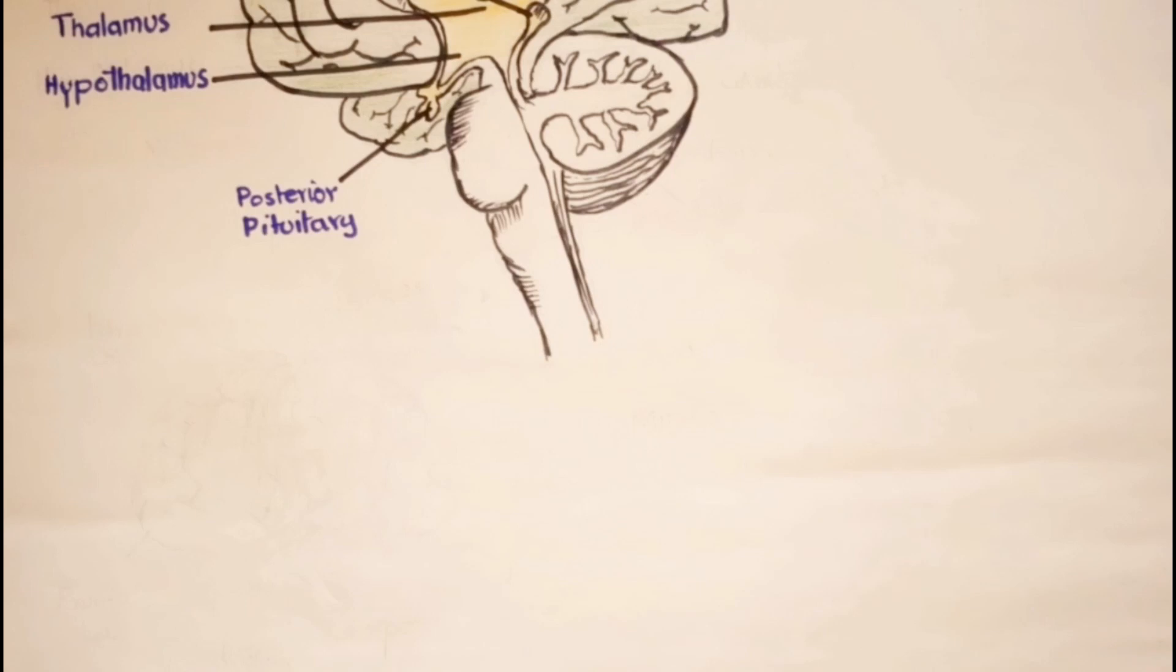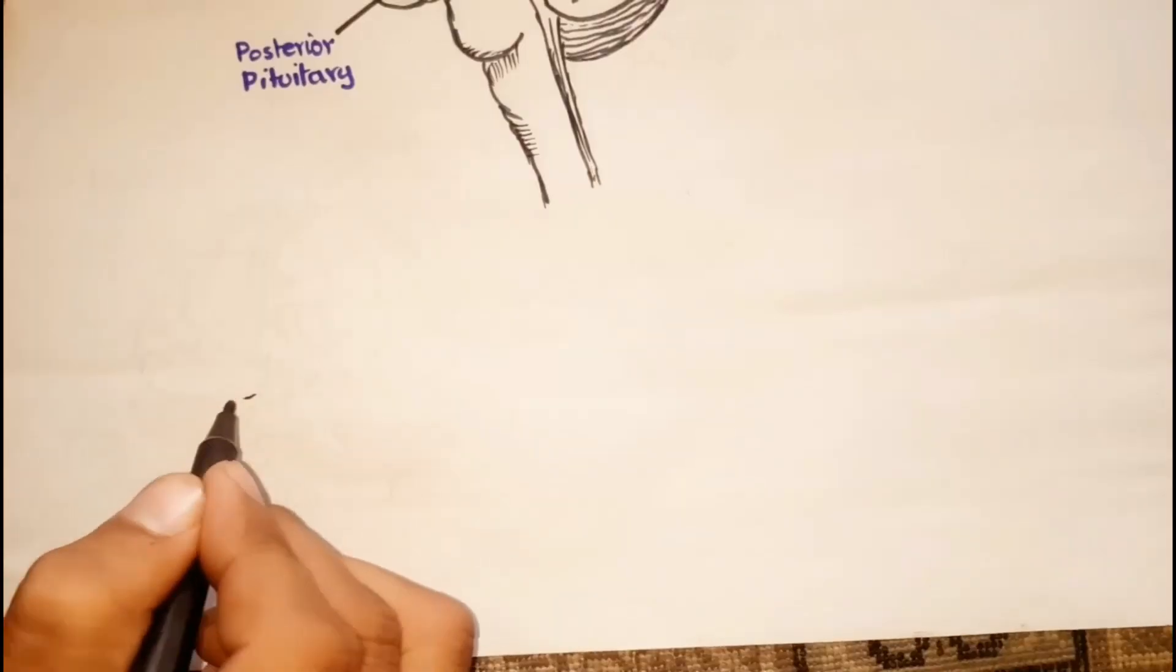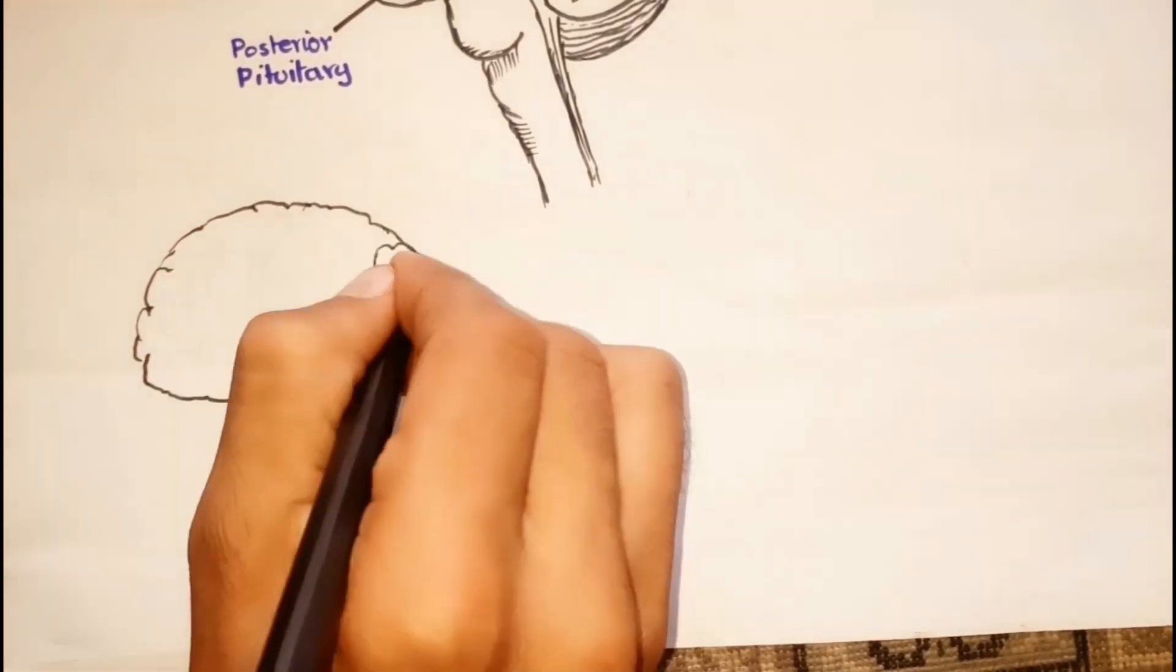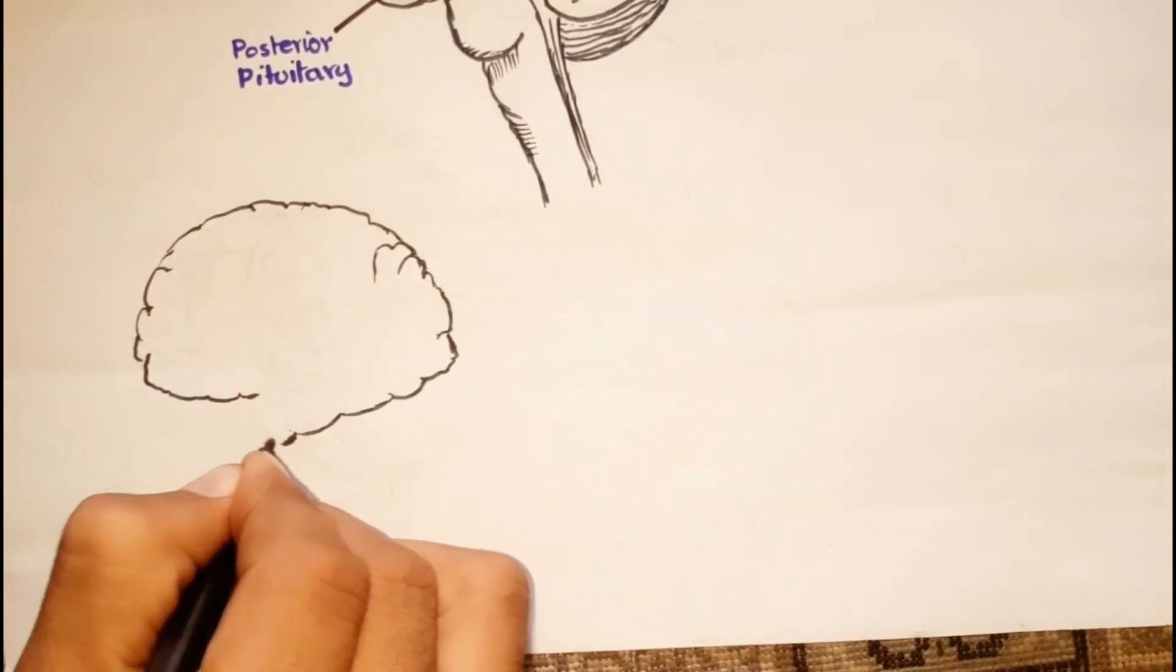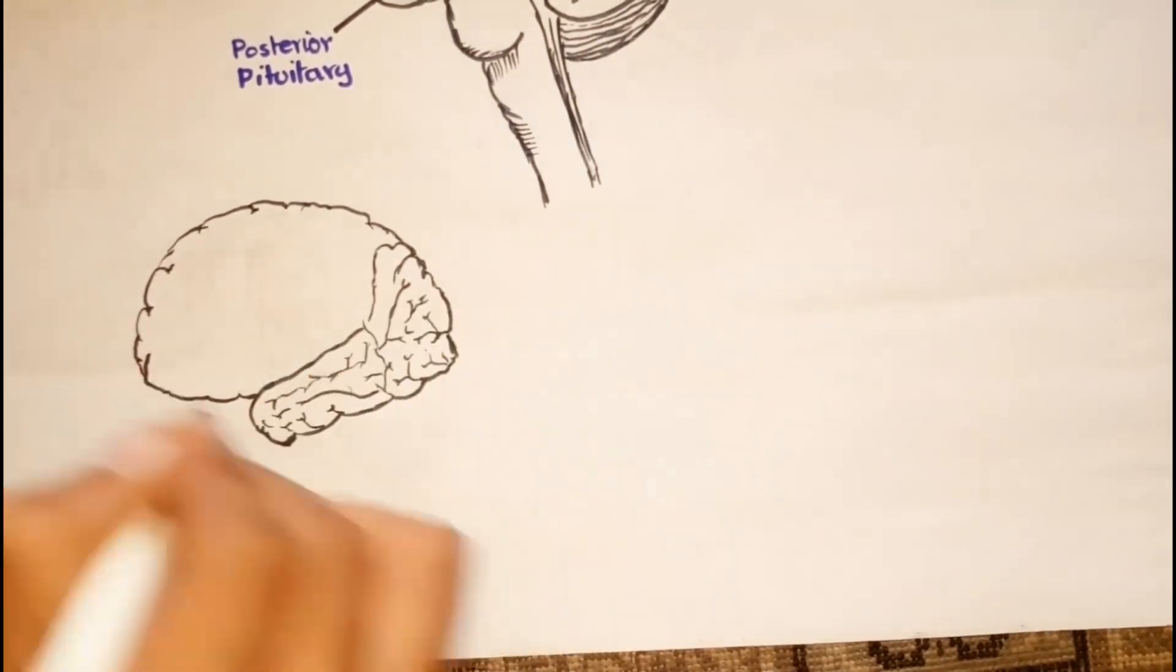Each cerebral hemisphere is further divided into different lobes. For this I'm drawing the lateral or side view of the brain.